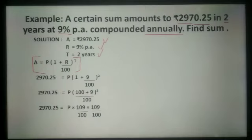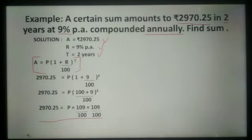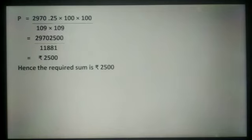Amount 2970.25 is equal to P into 1 plus 9 upon 100 raised to the power 2. On solving this, we are getting 2970.25 is equal to P multiplied by 109 divided by 100, multiplied by 109 divided by 100. On solving this, we are getting principal is Rs. 2,500. Hence, the required sum is Rs. 2,500.